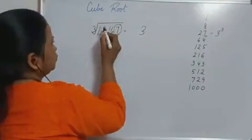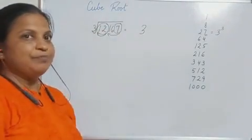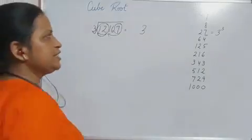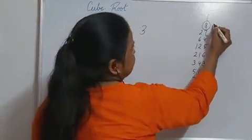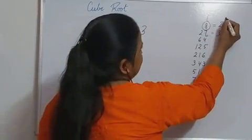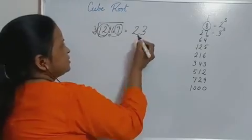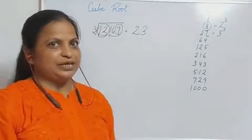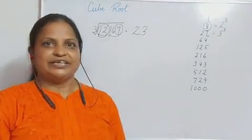Then we will go to the other group, that is 12. Before 12, what is the nearest cube? That is 8, which is 2 cubed. So the tens digit is 2. It means the cube root of 12,167 is 23.